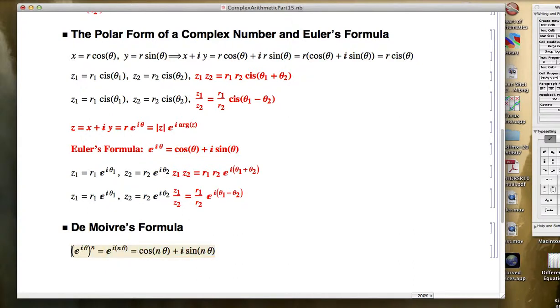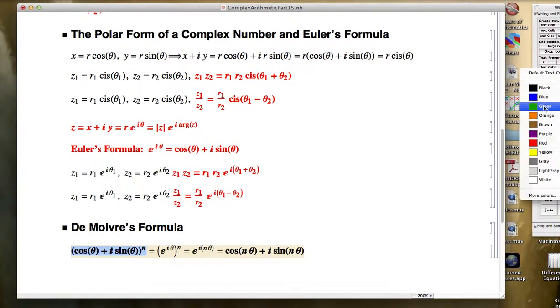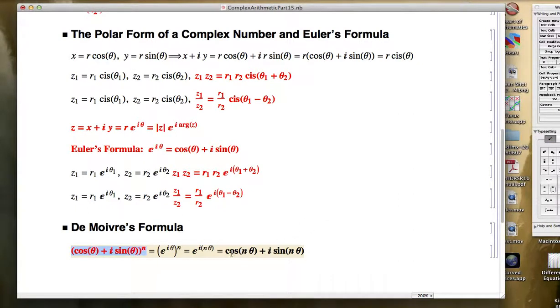But there's something else I can do back over here. I can think of e to the i theta to the n power as this thing to the n power. In other words, this thing equals this thing. And that is not obvious, especially if you're not thinking at all about Euler's formula. Even if you are thinking about Euler's formula, perhaps it's still not obvious that this would be true. But it is.